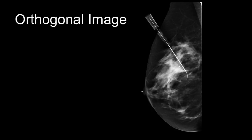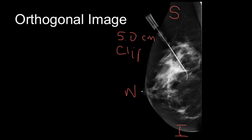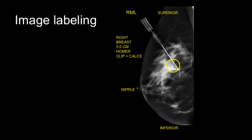Once accurate needle positioning is confirmed, label the images for the breast surgeon. Label the superior breast, inferior breast, and nipple. Note the size of the needle used — for example, a five-centimeter Homer — and what is localized, such as the clip. This can be done by labeling images in PACS or using a wax pencil. On the labeled image, mark superior and inferior aspects of the breast, nipple location, circle the target, document which breast was localized, the length of the needle, and what was localized — in this case, clip and calcifications.